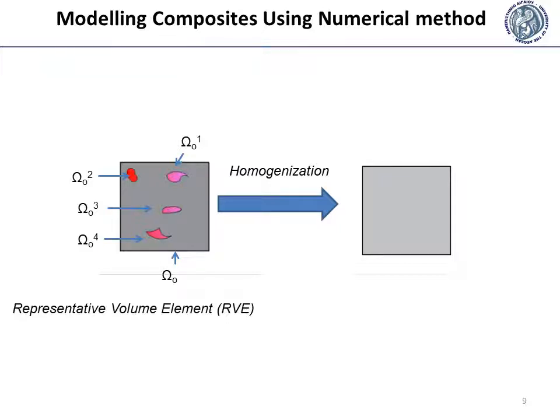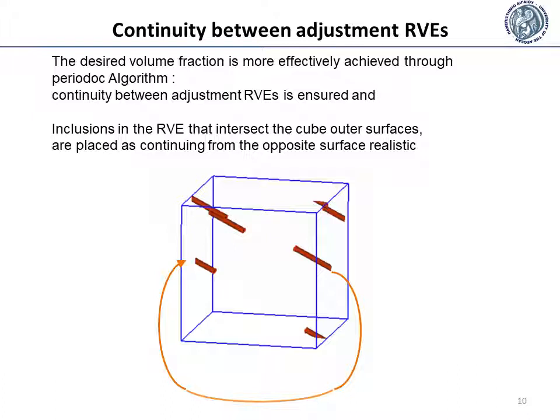The goal of the modeling is to predict a material's behavior at the macroscopic level using information from smaller scales. A homogenization method is successful when the macroscopic response of the heterogeneous composite material is the same as the homogenized material response. For the purposes of this research, the so-called periodic geometry algorithm was used.